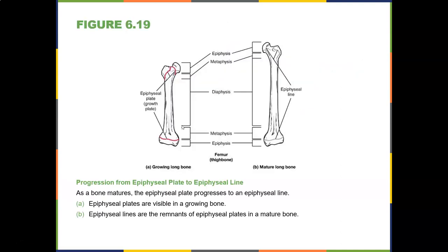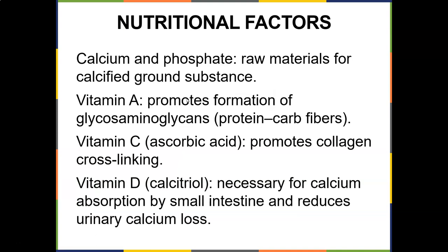As bones mature, the epiphyseal plate progresses to an epiphyseal line. Plates are visible in a growing bone; lines are remnants in a mature bone — distinguishable on X-rays and radiographs. A fracture at the growth plate from trauma like snowboarding or skateboarding can cause premature closure, resulting in one limb becoming shorter than the other due to loss of longitudinal growth.